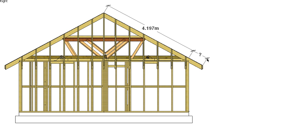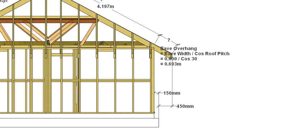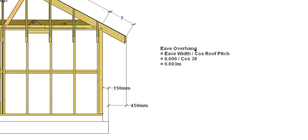We still need to know the eave overhang distance down the roof — not to be confused with eave width, which is the horizontal distance out from the wall. The plan shows the eave width is 450mm, and we have to add back the 150mm we deducted for the brick and cavity, giving us 600mm total. So 600mm divided by cos(30°) gives us an overhang of 0.693m.